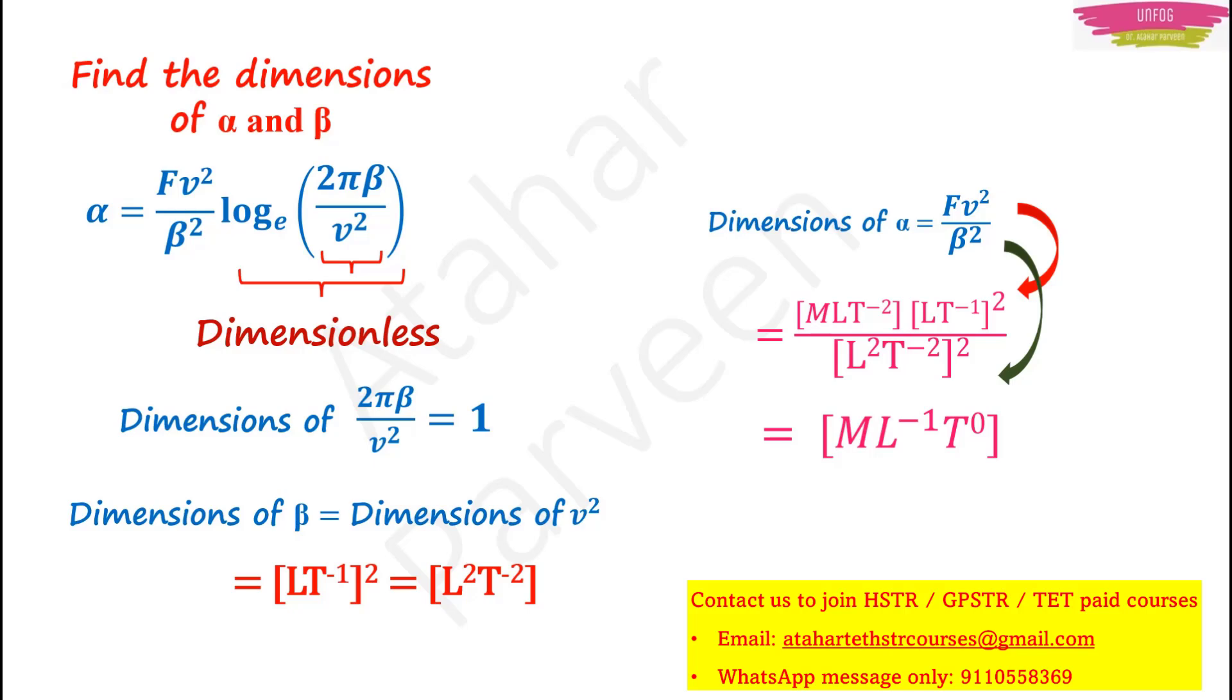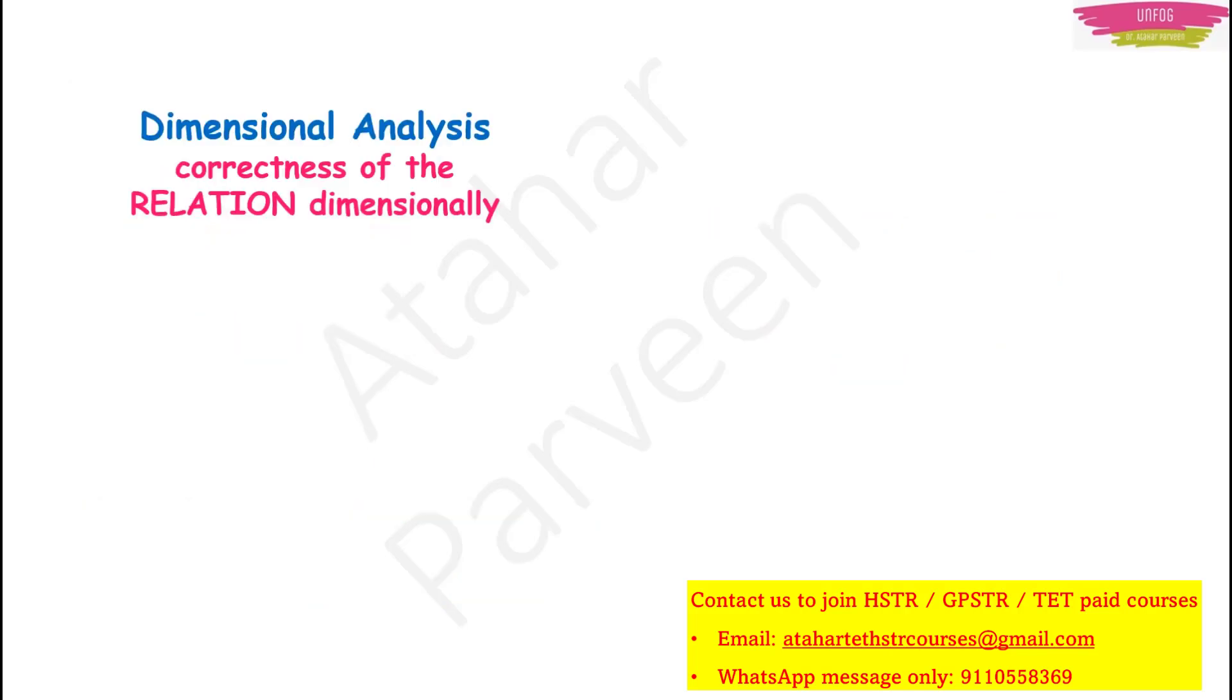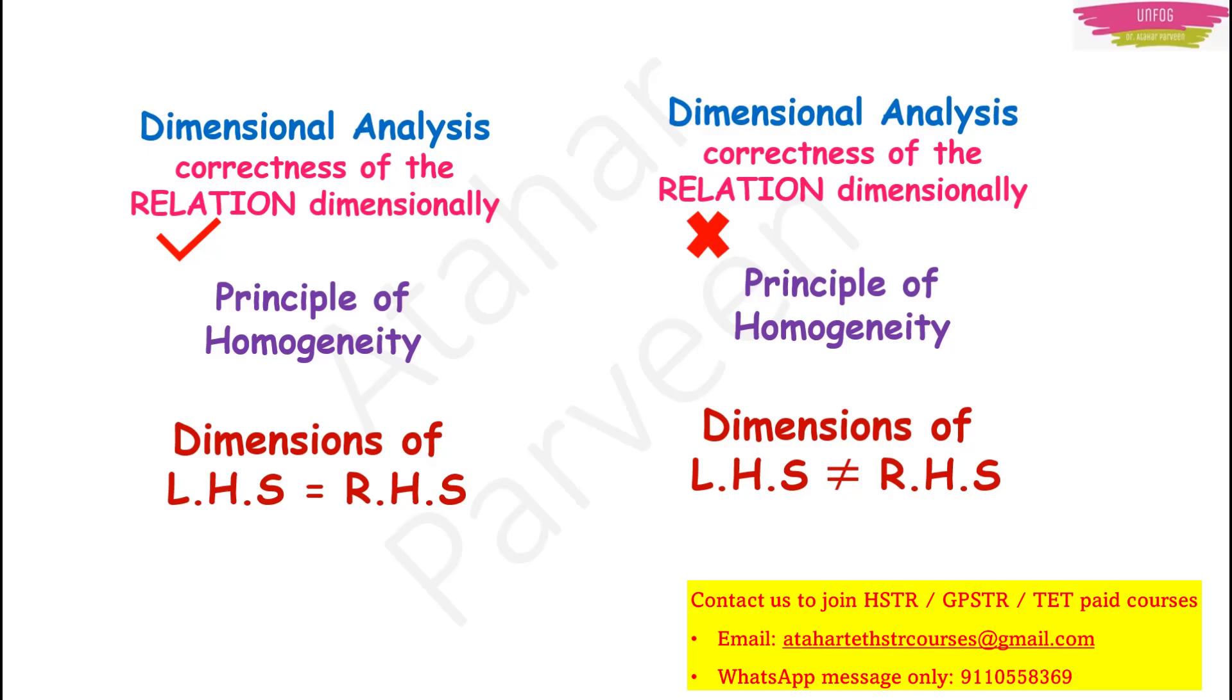And also note that dimensional analysis always works to check the correctness of a relation dimensionally. Actually, it is based on the principle of homogeneity. That is, in a relation, the dimension on left hand side should be equal to the dimension on right hand side. Then only the relation is correct. If the dimension on two sides will differ, then the relation is incorrect.